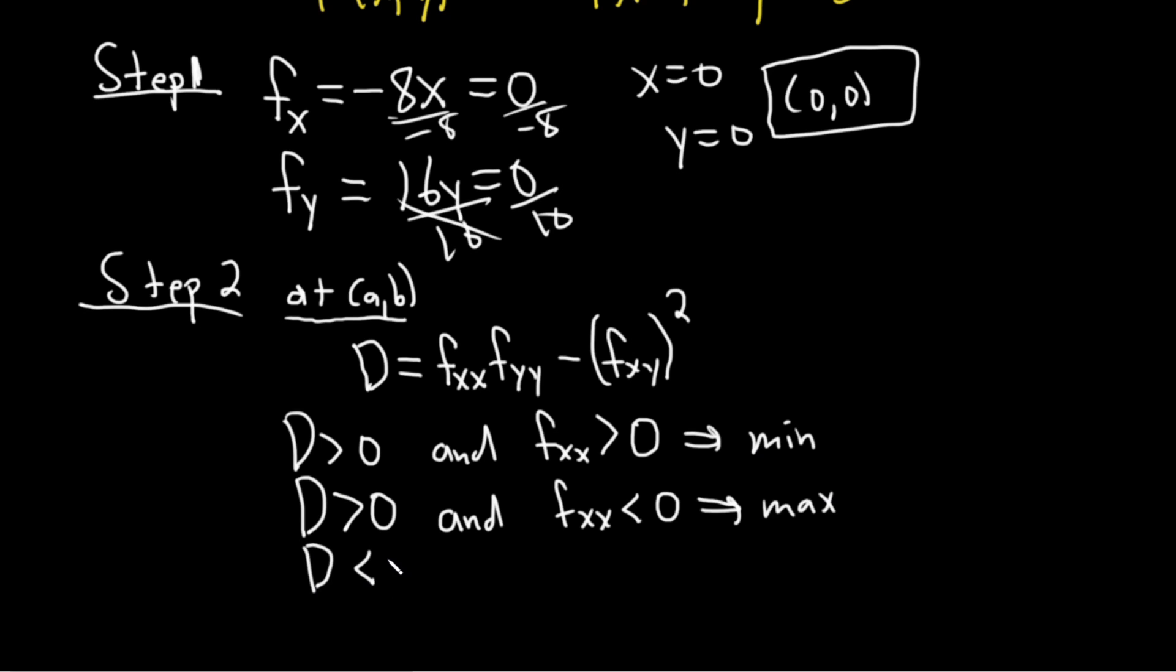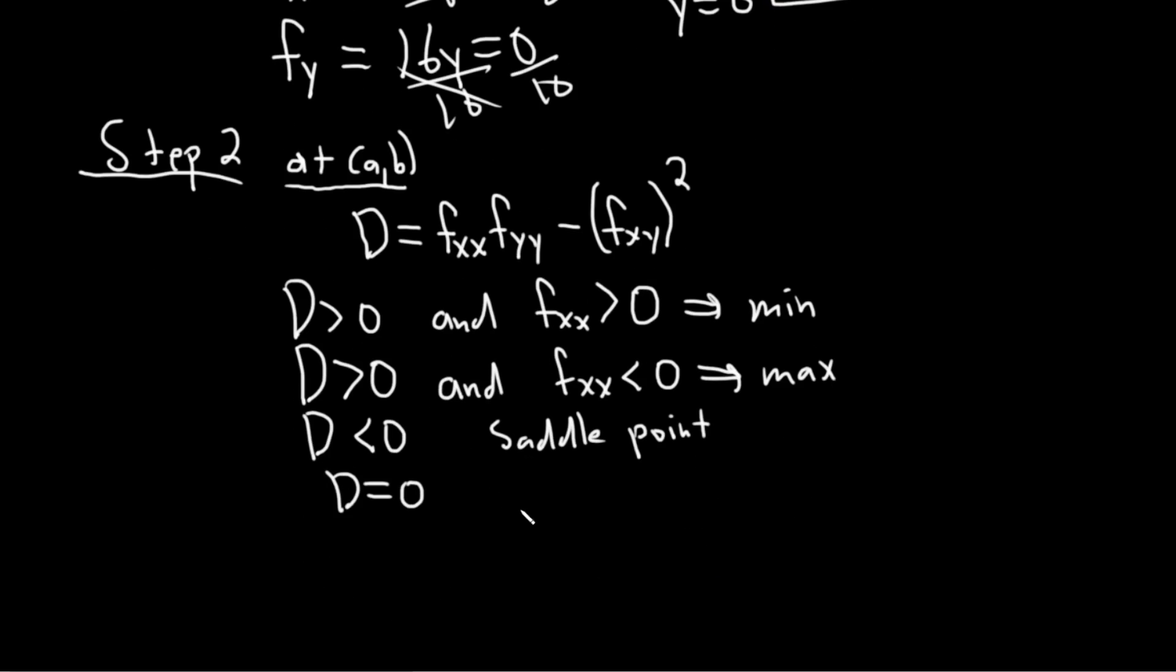If big D is less than 0 you have what's called the saddle point. And if big D is equal to 0 the test is inconclusive. So it doesn't work. So inconclusive, no info in this case.